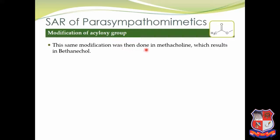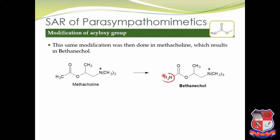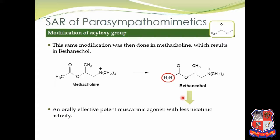The same modification — replacement of methyl by amino group — was done in methacholine, resulting in bethanechol. Bethanechol is an orally effective, potent muscarinic agonist with less nicotinic activity. It has two advantages: the beta-methyl group makes it a selective muscarinic agonist, and the amino group replacing methyl makes it less readily hydrolyzed, so it is given orally. Nicotinic side effects are thus reduced with bethanechol.